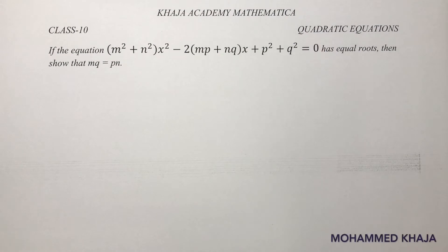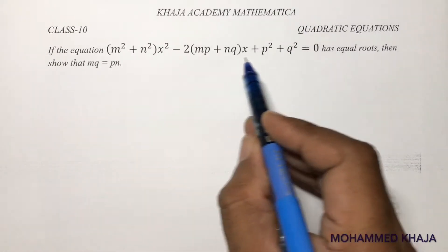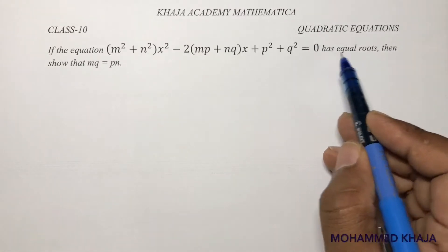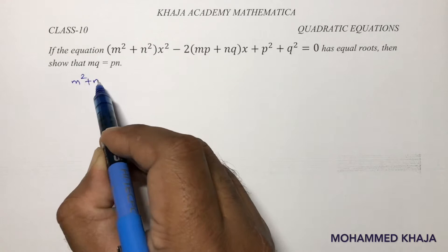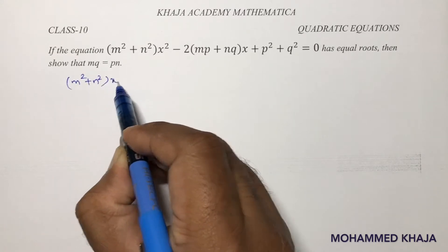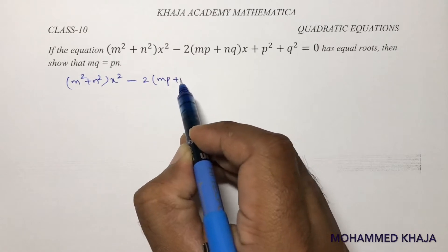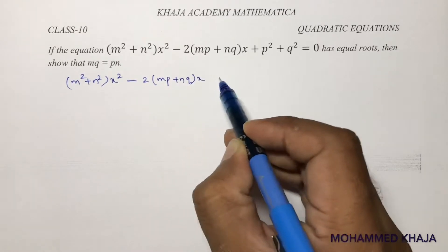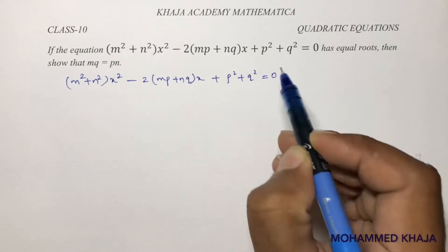If the equation (m² + n²)x² − 2(mp + n³)x + (p² + q²) = 0 has equal roots, we need to find the condition. Compare this with the standard quadratic equation.